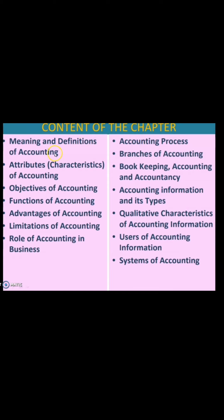In this chapter, we will have to study the meaning and definition of accounting, attributes — which is also known as the characteristics of accounting — objectives of accounting, functions of accounting, advantages, limitations of accounting, role of accounting in business, accounting process, branches of accounting, bookkeeping, accounting and accountancy, accounting information and its types, qualitative characteristics of accounting information, users of accounting information, and systems of accounting.